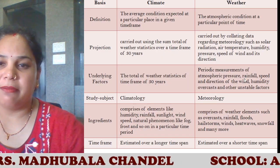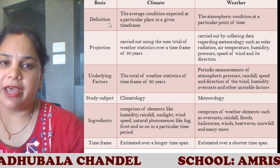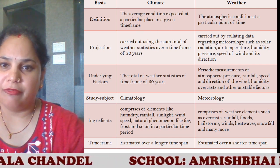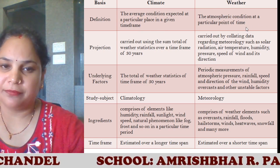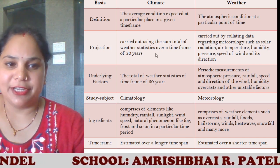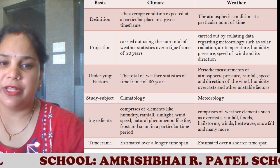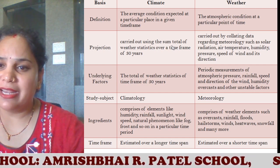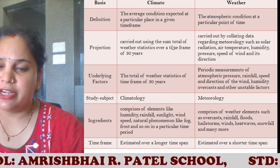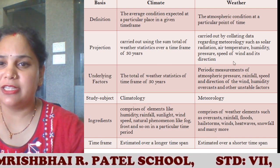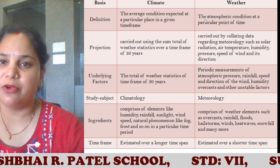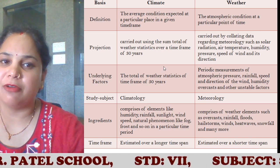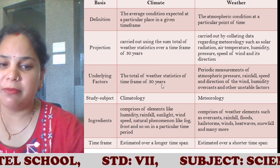Let's see the difference between climate and weather. Climate is defined as the average condition expected at a particular place in a given time frame. Weather is the atmospheric condition at a particular point of time. In terms of projection, climate is carried out using the sum total of weather statistics over a time frame of 30 years. Weather is carried out by collecting data on meteorological elements such as solar radiation, air temperature, humidity, pressure, wind speed, and its direction. When you collect this data over a long period of time, it makes the climate of a place. The total weather statistics time frame is 30 years.